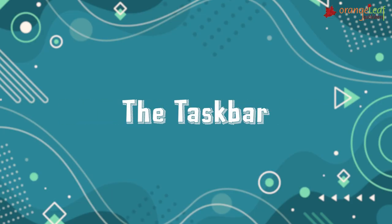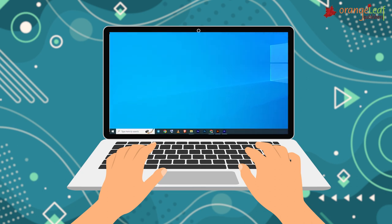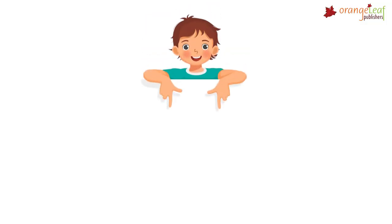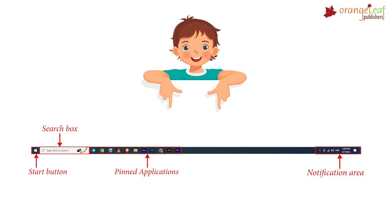Now let's see the Taskbar. The taskbar is the horizontal bar located at the bottom of the desktop screen. The taskbar contains the Start button, Search box, Pinned applications, and Notification area.